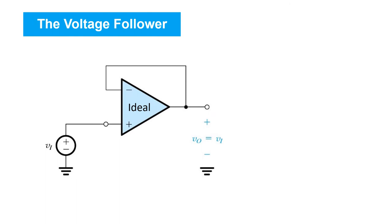Finally, let's consider another important op-amp configuration: the voltage follower, shown here. The voltage follower can actually be thought of as a special case of the non-inverting configuration, where resistor R2 — which usually appears in feedback — is replaced by a short circuit, so it can be thought of as a resistor with a value of zero. And R1, which would usually appear here, is replaced with an open circuit and can therefore be thought of as a resistor with a value of infinity.